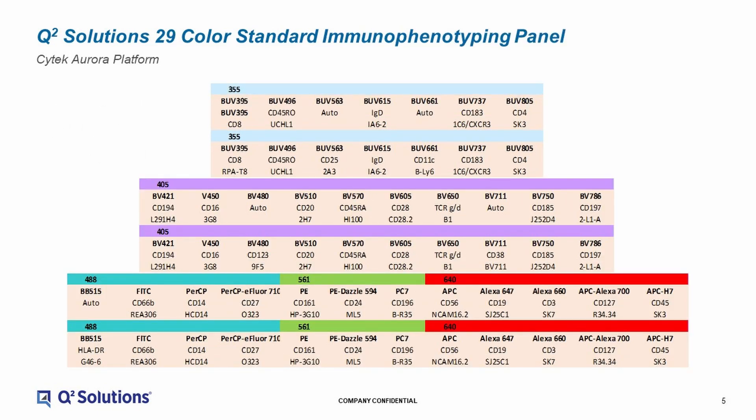In addition to the standard intracellular cytokine panel, we are also validating a 30-color standard immunophenotyping panel for general use. This panel has been designed to allow enumeration of the most requested cell lineages and subsets, including TBNK monocyte dendritic cell subsets, neutrophils, and eosinophils. Next is Pat Urban, who will present our molecular assay offerings for COVID-19 SARS-CoV-2 trials.